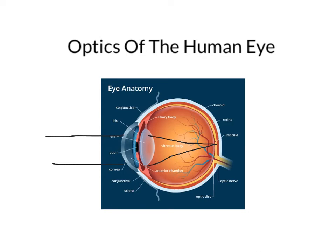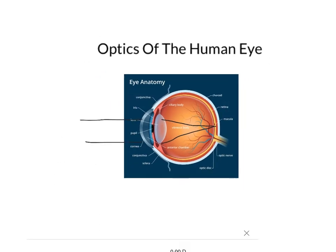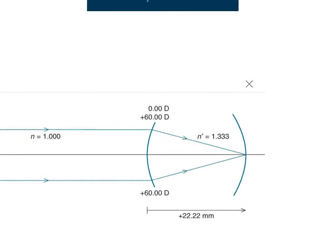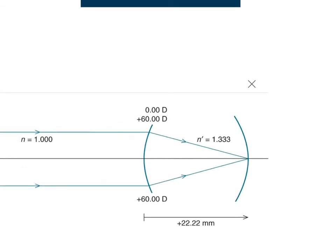Like other things in physics, in optics we can simplify this. We can simplify it to something called a reduced eye. In the reduced eye, the refracting surface is simplified into just one surface, and this one spherical refracting surface is 60 diopters. The index of refraction inside the eye is estimated as 1.333 for the entire eye.